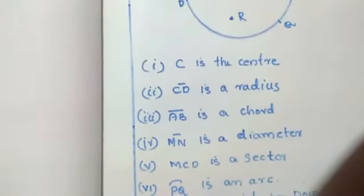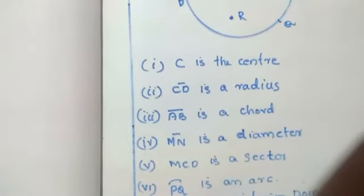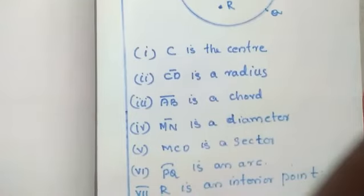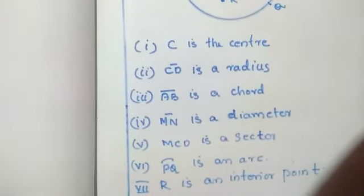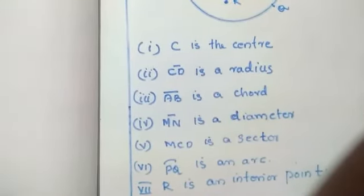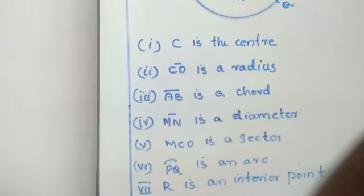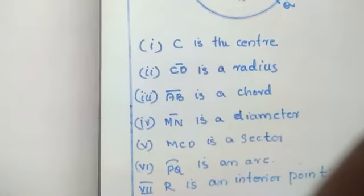MN is a diameter. MCD is a sector. PQ is an arc. And, R is an interior point. So, children, you should draw a circle and its parts like this.